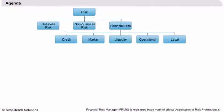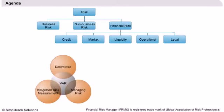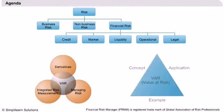In this presentation we will learn about risk, the types of risks such as business risk, non-business risk and financial risk. The entire certification program is centered on financial risk. Financial risk has been further divided into credit risk, market risk, liquidity risk, operational risk and legal risk. After discussing various types of risk, we will learn how risk is managed, what tools are currently in use for managing risk and the advancement in risk management. Then we will learn the basics of a very important tool for risk management: VAR or value at risk, its application and a few examples.